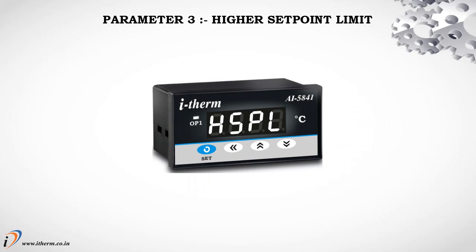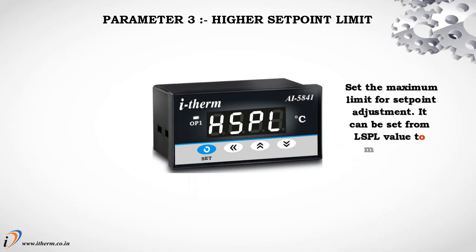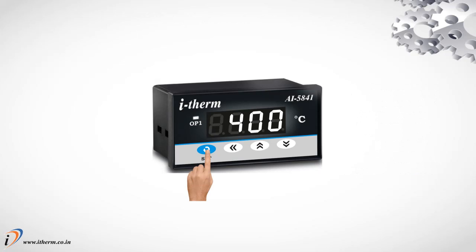Parameter 3: Higher Set Point Limit. Set the maximum limit for set point adjustment. It can be set from the L SPL value to the maximum specified range of the selected sensor. Default H SPL value is 400.